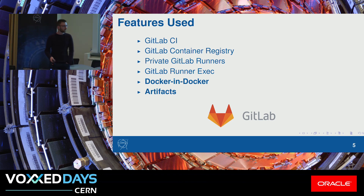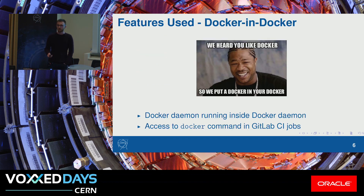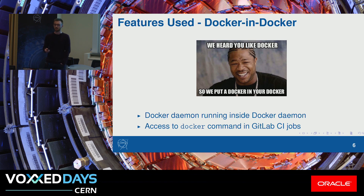The two biggest features we're using are Docker-in-Docker and artifacts. Docker-in-Docker, if you're not familiar, is when you put Docker inside of Docker. So when you're running a Docker daemon inside of a Docker daemon, this allows you to, from a Docker container, run Docker commands and spin up new Docker containers. This is very nice for testing.